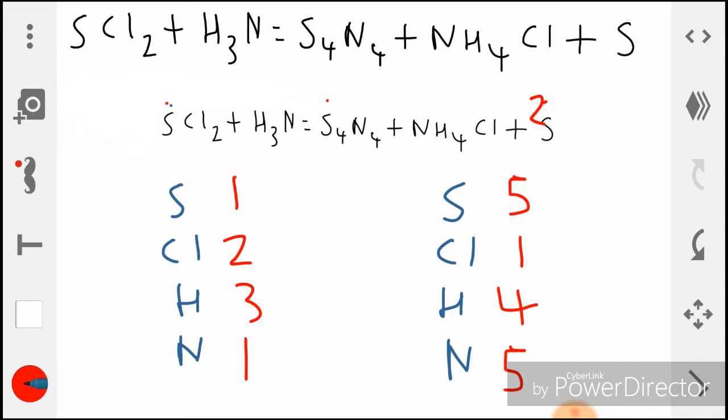Instead we could put a two there, and if we put a two there this will now become a six, and sixes are easier to work with than fives. Now we can multiply this by six right here, which means that we have to put a six in front of the Cl2.